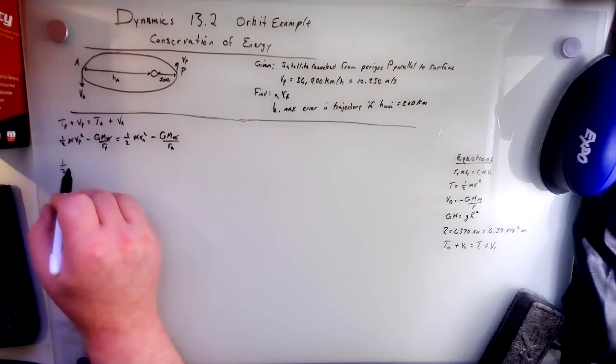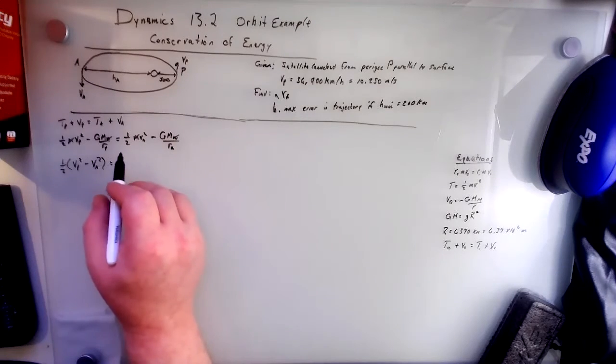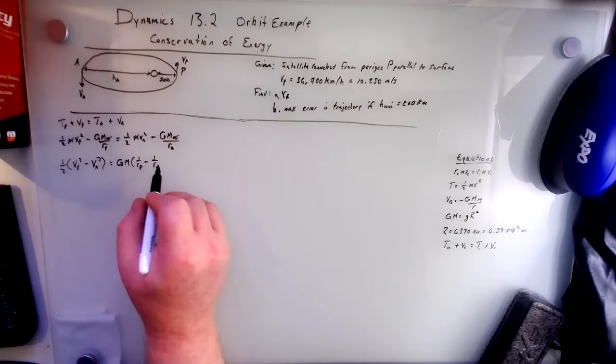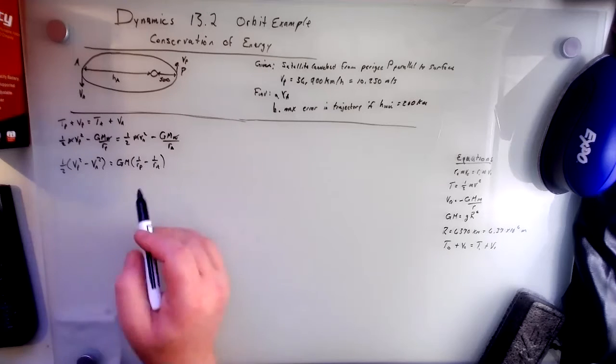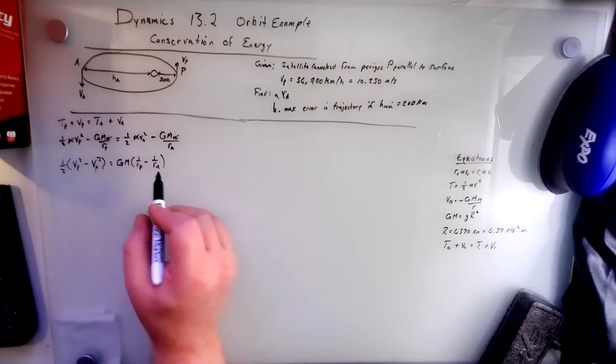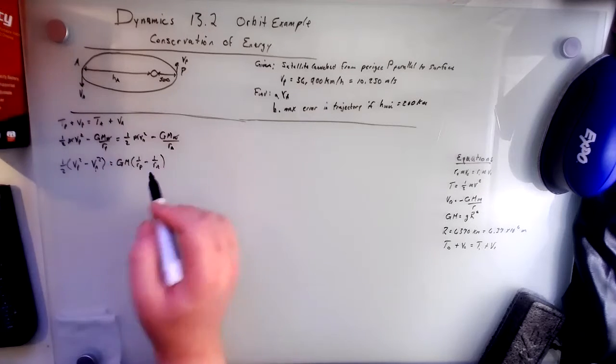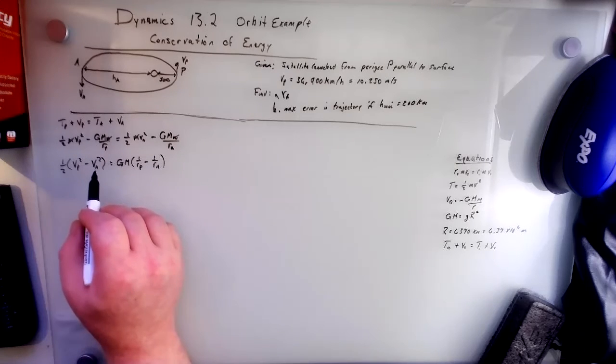So one half of vP squared minus vA squared equals GM times one over RP minus one over RA. And in this problem, in this equation right here, we have two unknowns, right? We have the velocity at the apogee and the radius of the apogee. Keep in mind that the radius and the height are not the same thing. So we need to get this vA out.